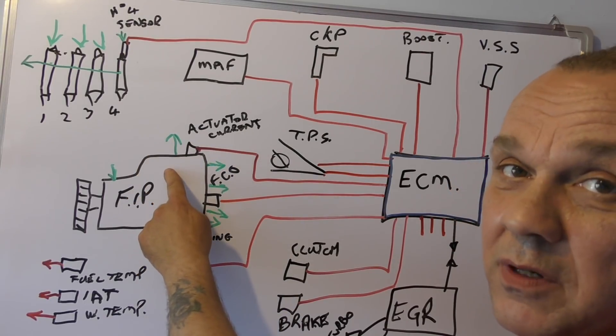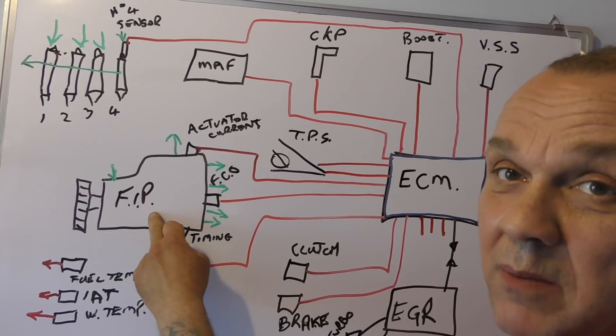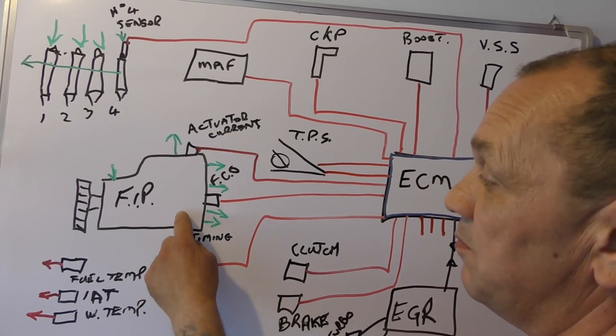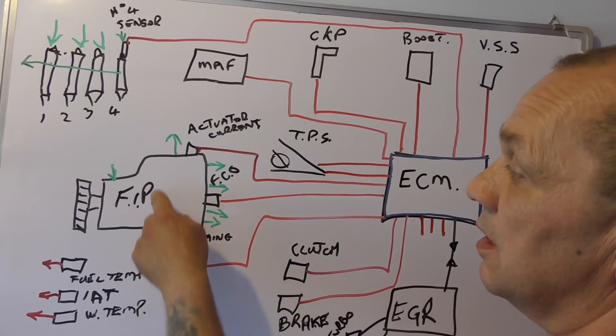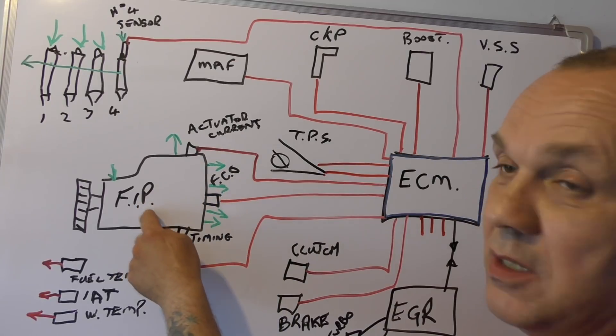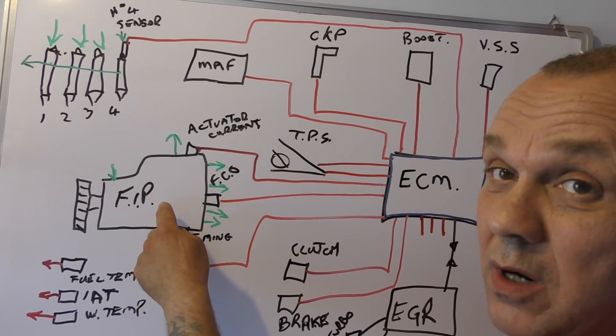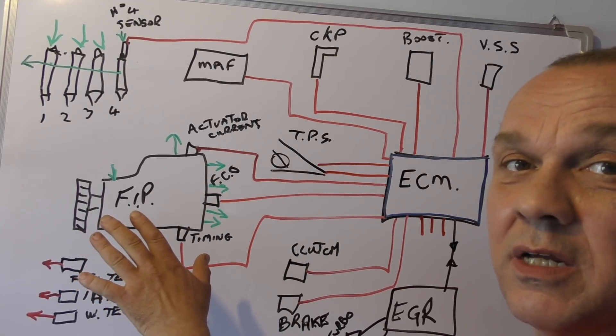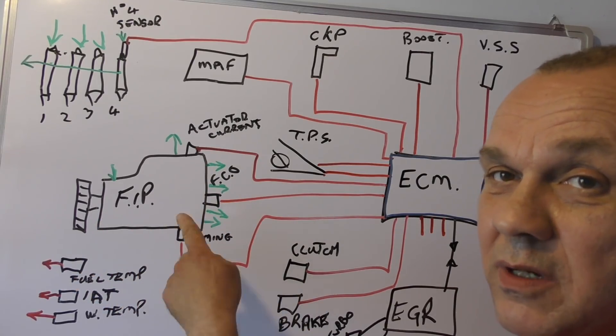These pumps do go wrong. Solenoid valves go wrong down here at the bottom, which is the timing. You also have a ribbon which is connected between the ECU and the pump, and that can go wrong as well. Transits, Vauxhalls of a certain age, they all have pumps like this and they're a pain in the ass.